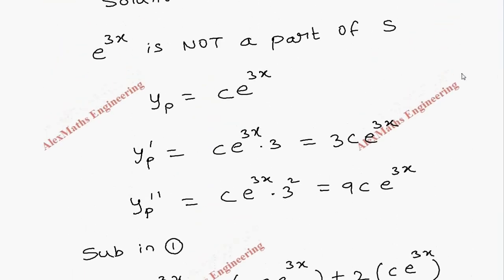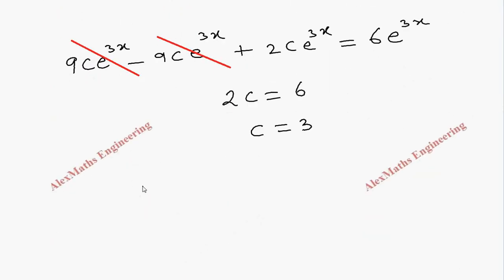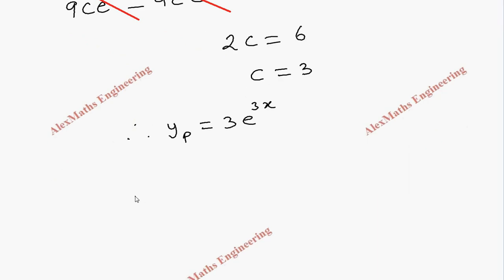Therefore we get the particular integral equal to 3e^3x. After that, the complete solution y is equal to complementary function plus particular integral.